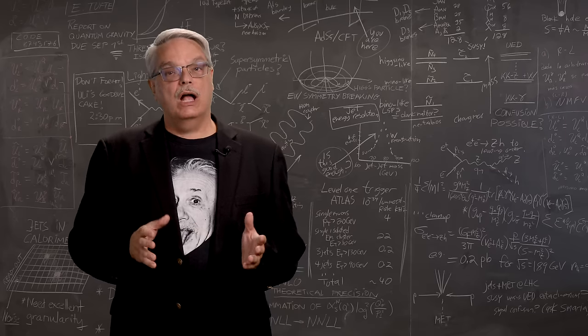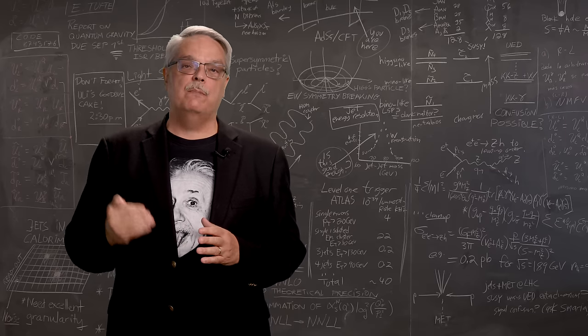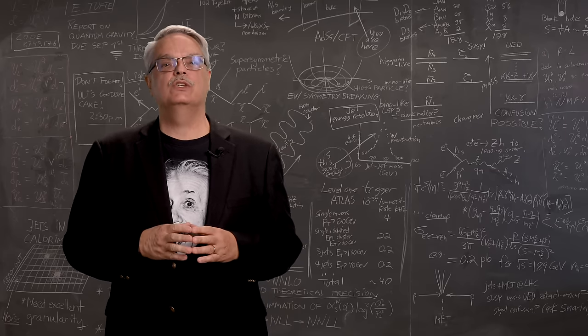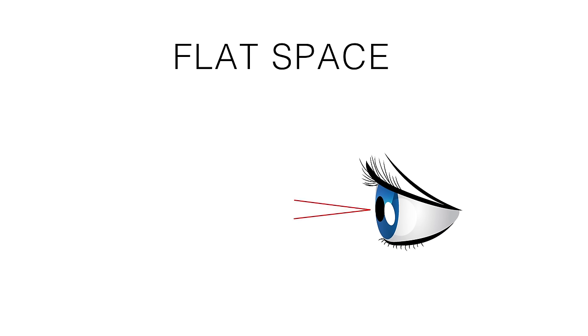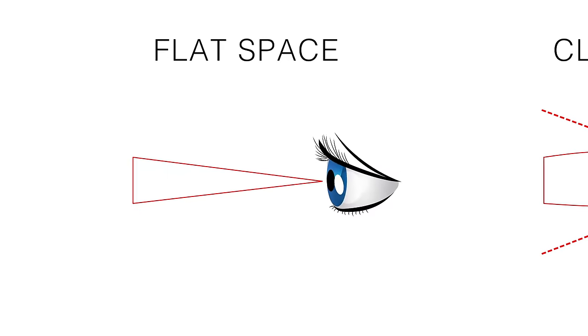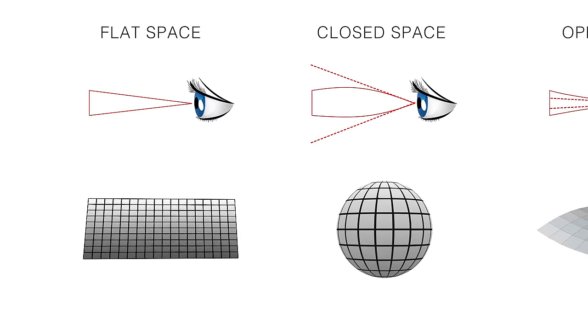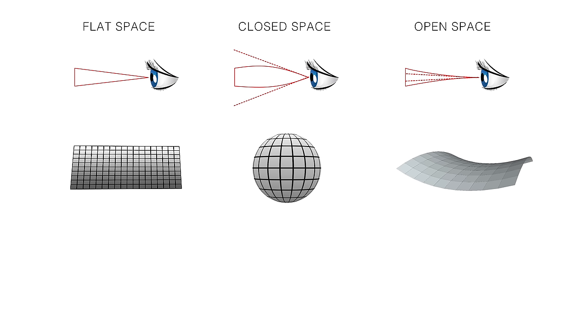So, this has consequences when measuring the apparent size of these distant spots in the microwave background. If space is flat, the line that crosses the spot you're looking at and the two lines that go from the edges of the spot to your telescope form a common triangle. But in an open or closed curved space, the triangles are distorted.